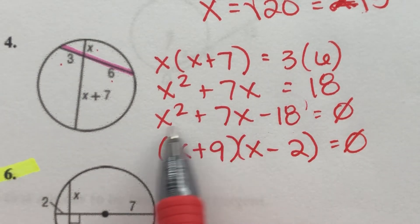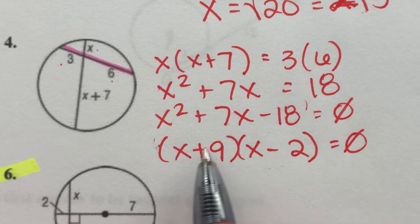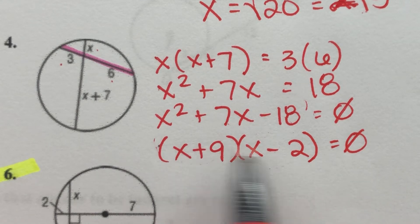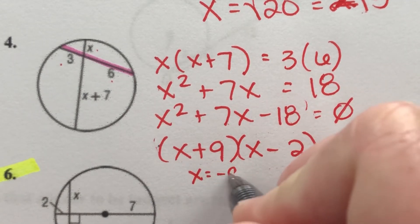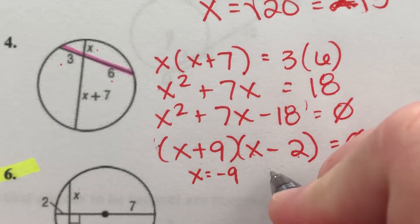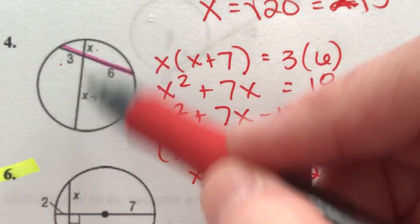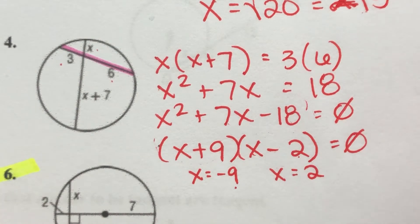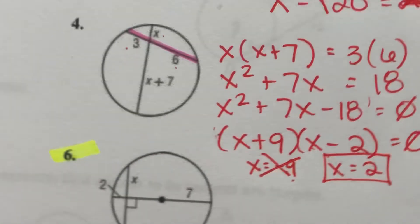And then remember the last step of solving when you're factoring is to set each binomial equal to zero using the zero product property. When we multiply this term by this term, this whole parentheses by this guy, one of the two of them, if not both, have to be equal to zero. We don't know which one, so we're going to solve for both. So we're either going to get X plus 9 equals zero, so X would have to equal negative 9, or X minus 2 equals zero, so X would have to equal positive 2. Now the problem here is that X represents the length of a line. So if X was negative 9, can this chord be negative 9? No, lengths can't be negative. So this guy's out. So our answer here is X equals 2.